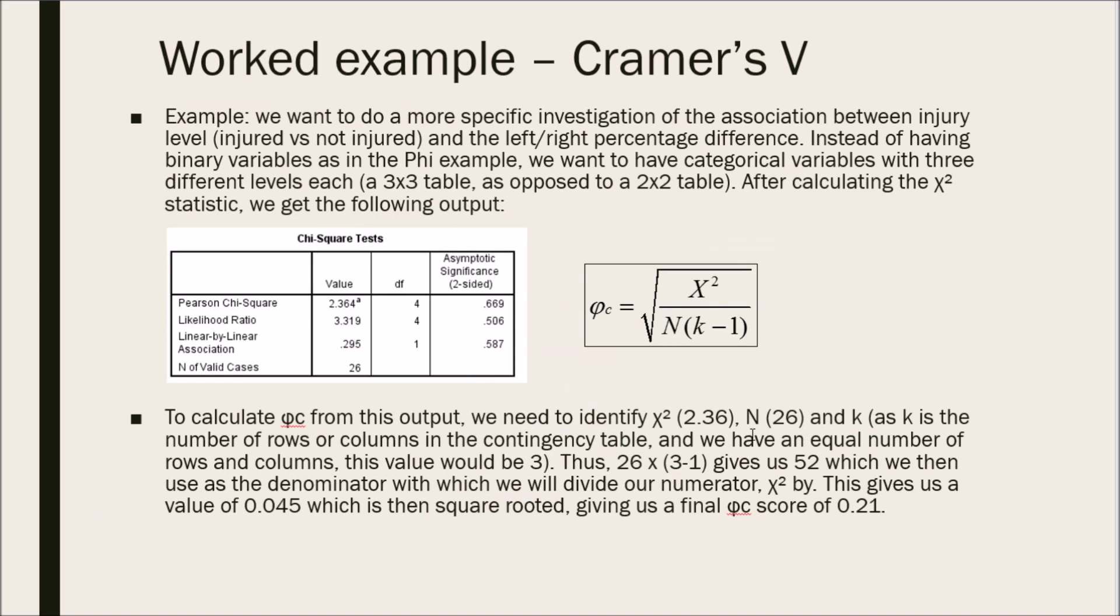Going through a worked example, let's say we want to do a more specific investigation of the association between injury level, injured versus non-injured, and the left-right percentage difference. Instead of having binary variables, as in the Phi example, we want to have categorical variables with three different levels each. So, a 3 by 3 table, as opposed to a 2 by 2 table. After calculating the chi-square statistic, we get the following output.